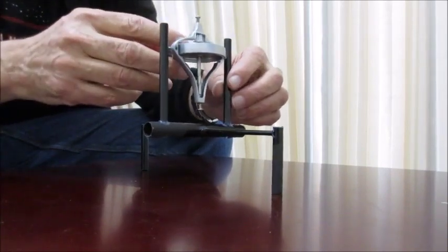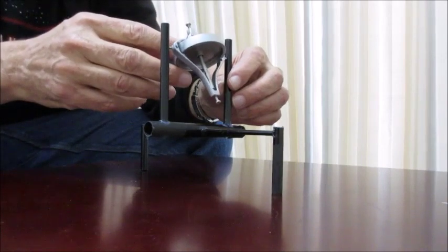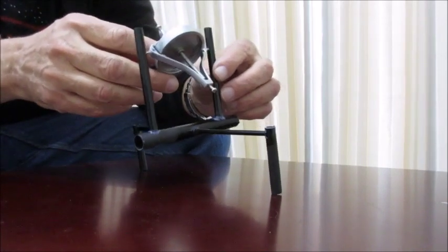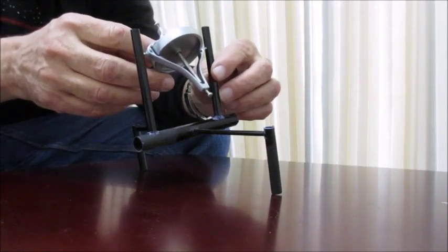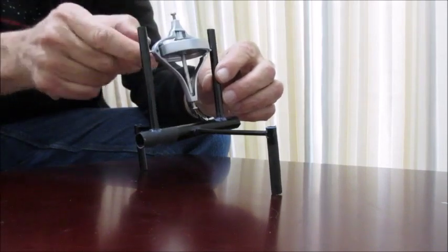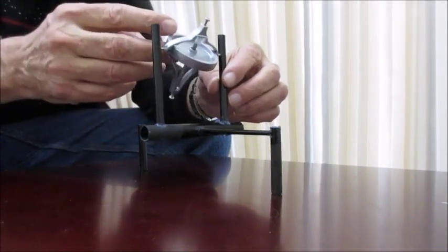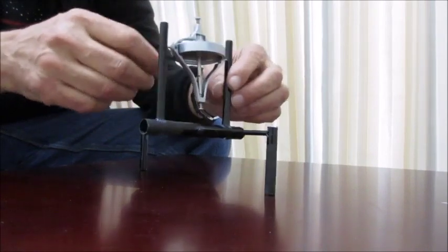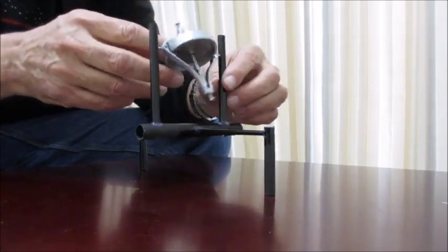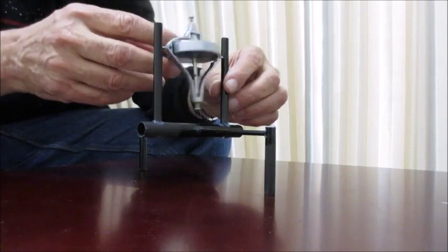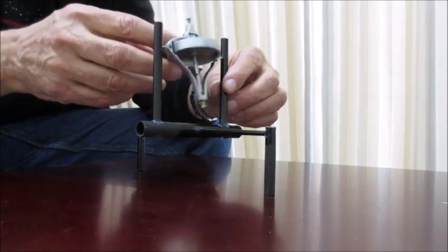When you turn the gyro this direction, it's going to lean this way or the other way depending on which way the rotor is turning. If you turn it this way, it leans this way. So you can control the balance by which way the gyroscope itself is rolling.